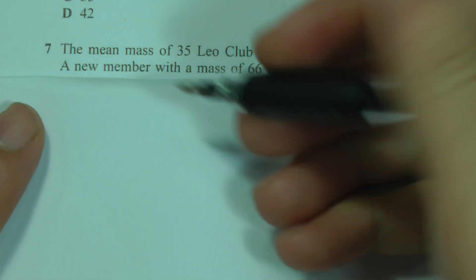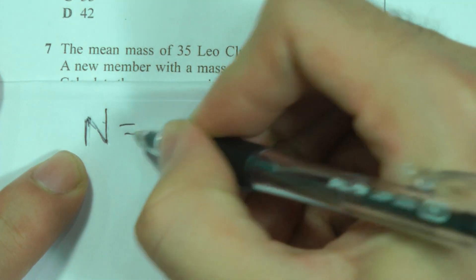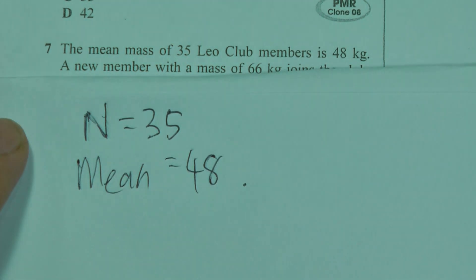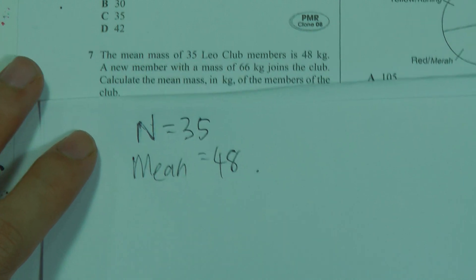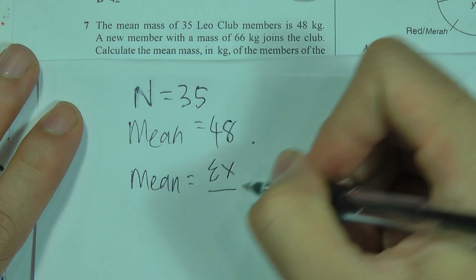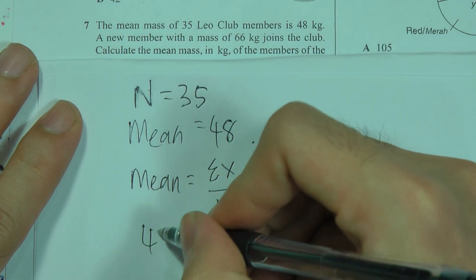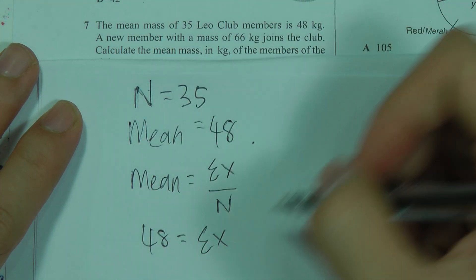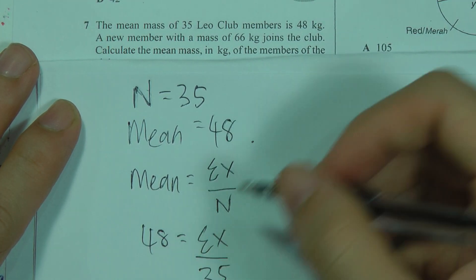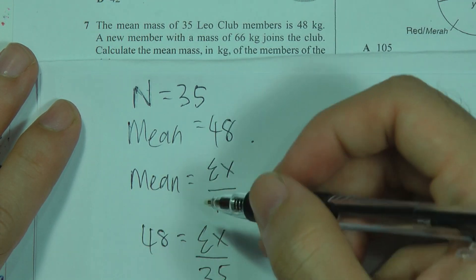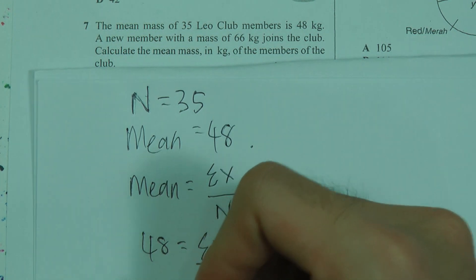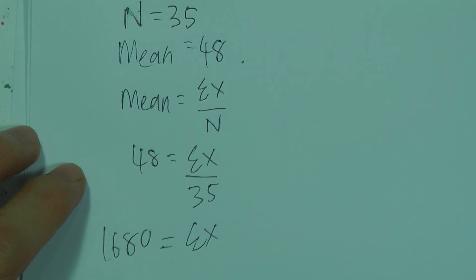We know n = 35 and mean = 48. Using mean = sum of x / n, we can find sum of x equals 48 × 35 = 1680. This is the total mass of the original 35 members.